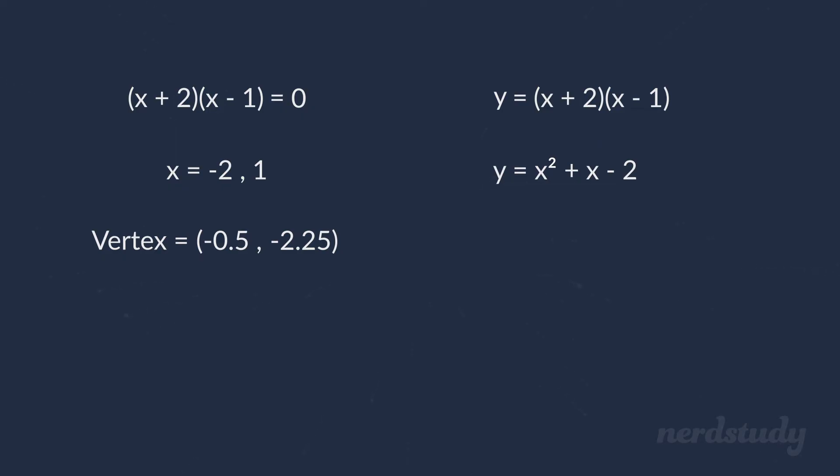Now, in order to complete the squares, we take the number being multiplied by x here, which is 1, and then we divide it by 2, which becomes 1 over 2, and then we square it, giving us 1 over 4. So, we decide to use this 1 over 4 to add and subtract to this equation to complete the squares, and give ourselves a perfect square trinomial.